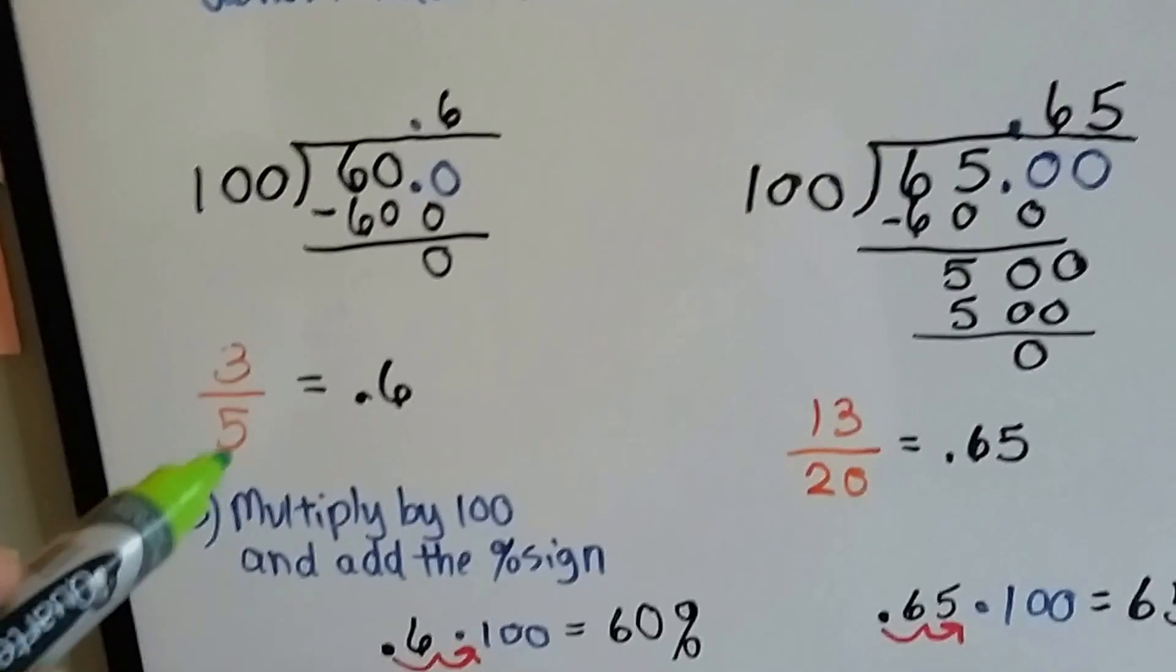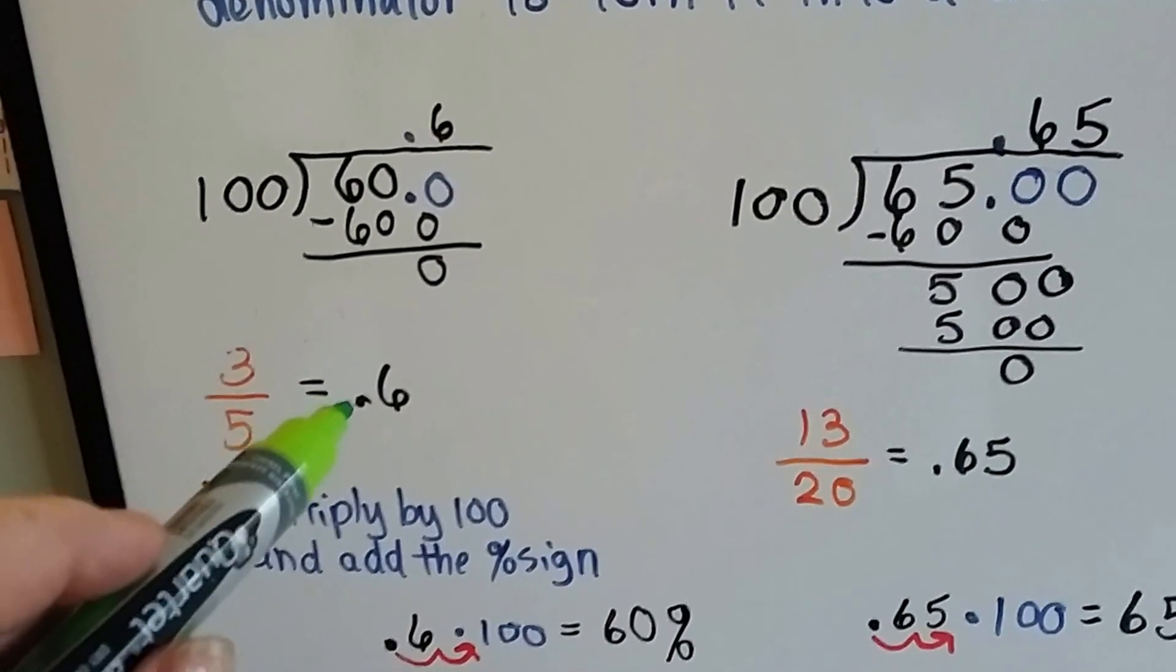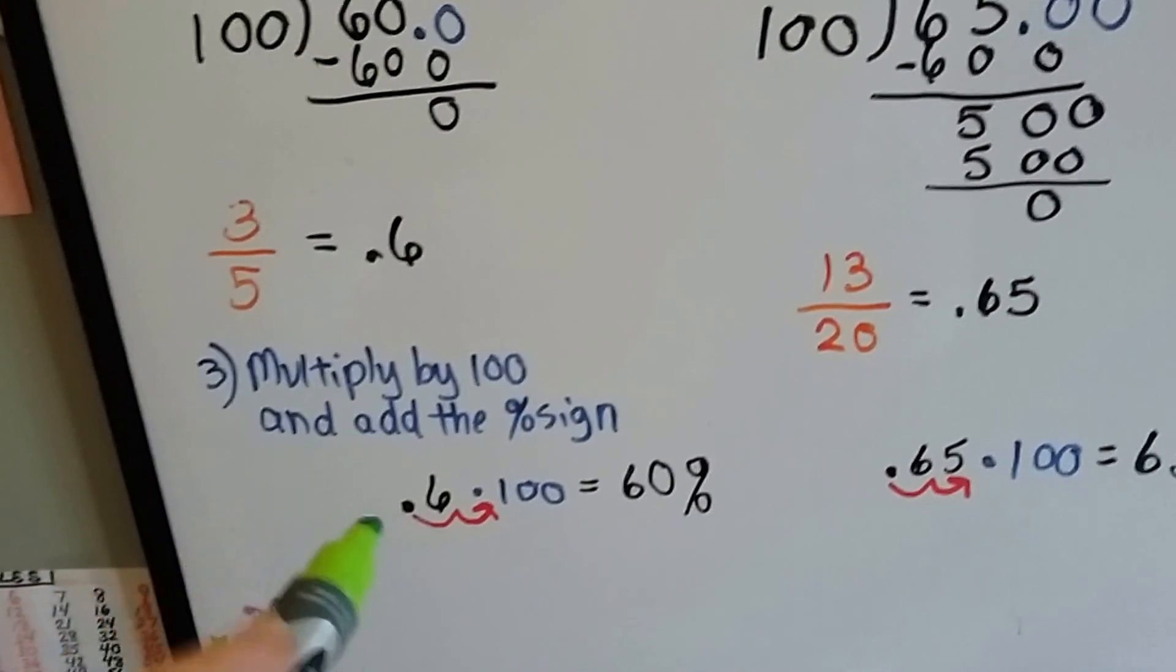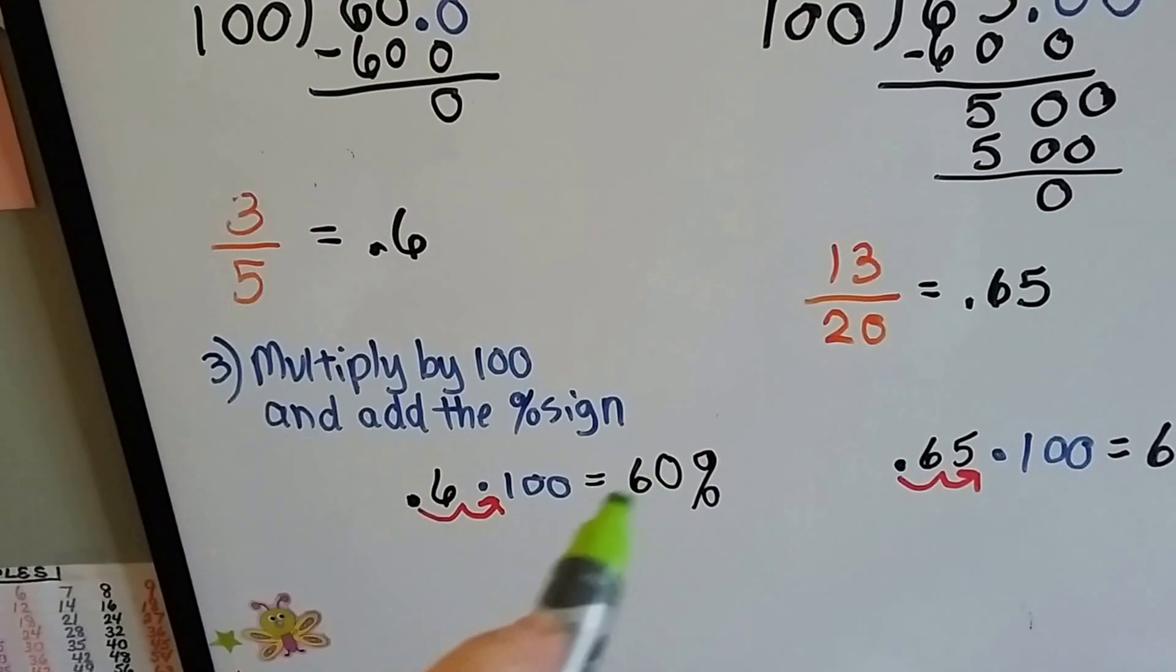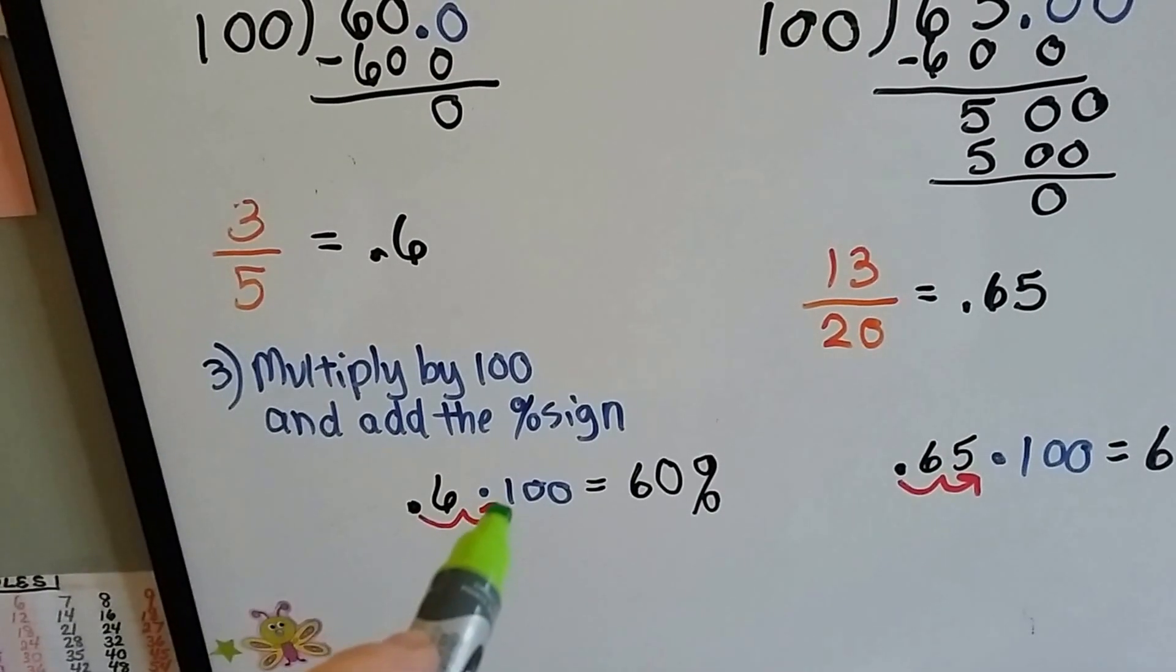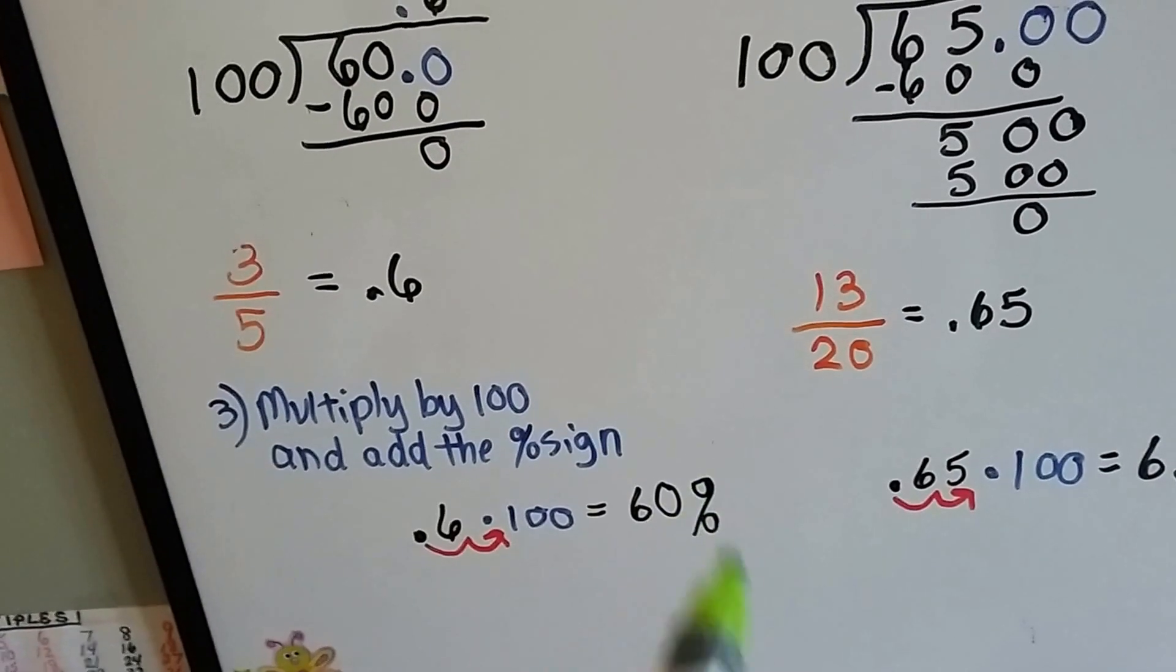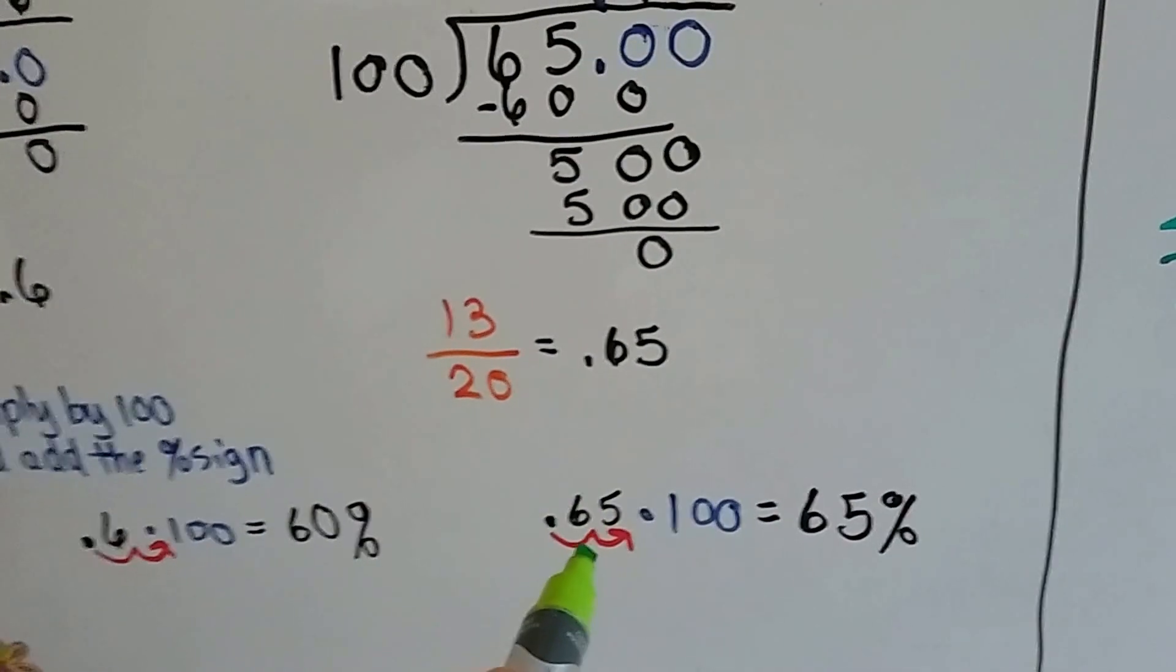So the .6, our three fifths turns into a .6 as a decimal. So now all we have to do is multiply it by 100 and add the percent sign. We multiply the .6 times 100 and it moves the decimal point one, two spaces. So it's back here as a 60 and we just add the percent sign. For the .65, we do the same thing.